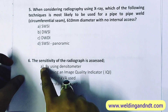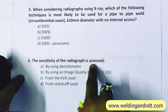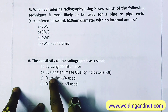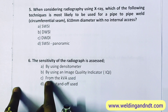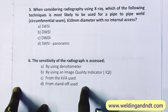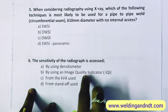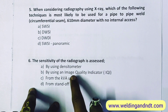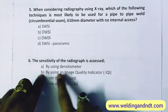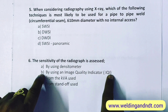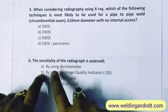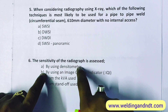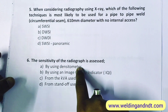Question 6: the sensitivity of a radiograph is assessed by using a densitometer, an image quality indicator, from the KVA used, or from the standoff used. The sensitivity of a radiograph is assessed by the penetrometer or IQI. The answer is B — by using an image quality indicator. Using a densitometer, we can check the density of the radiographic film.